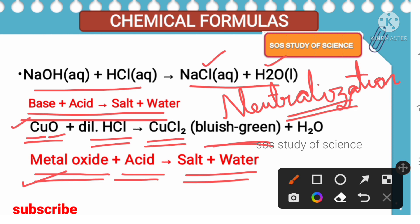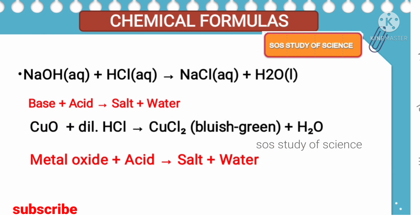Copper oxide is black in color (copper is brown; on adding oxygen it becomes black). When we add dilute hydrochloric acid to this black copper oxide, copper chloride salt is formed — it is bluish-green — along with water. Remember: both acid-base reactions and metal oxide + acid reactions commonly produce salt and water.